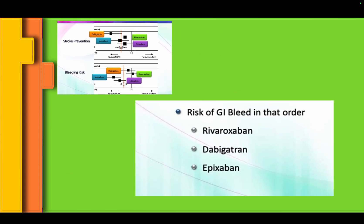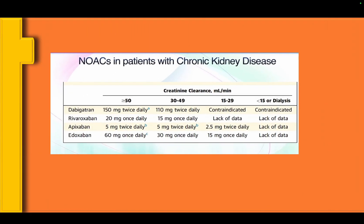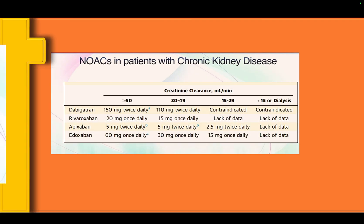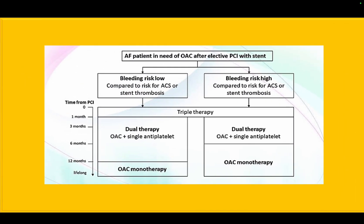For GI bleed risk, apixaban is the safest. For NOAC in CKD, again apixaban is the winner — that's exactly why patients worldwide are being shifted to apixaban. In coronary artery disease, even after PCI, remember triple therapy for about a month, then dual therapy depending on the degree of bleeding and thrombosis risk, and thereafter — once the patient is stable — only NOAC, no aspirin.